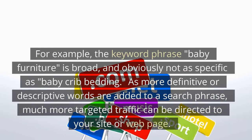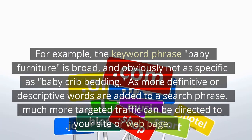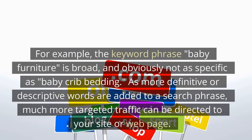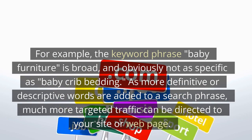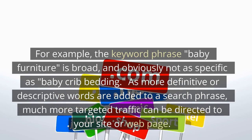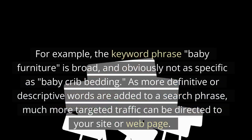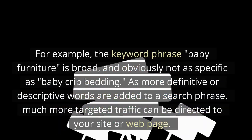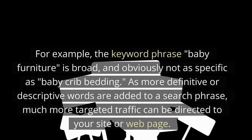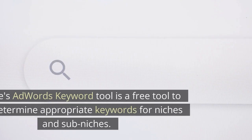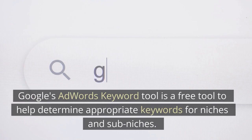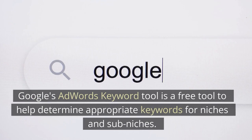For example, the keyword phrase 'baby furniture' is broad, and obviously not as specific as 'baby crib bedding.' As more definitive or descriptive words are added to a search phrase, much more targeted traffic can be directed to your site or web page. Google's AdWords keyword tool is a free tool to help determine appropriate keywords for niches and sub-niches.